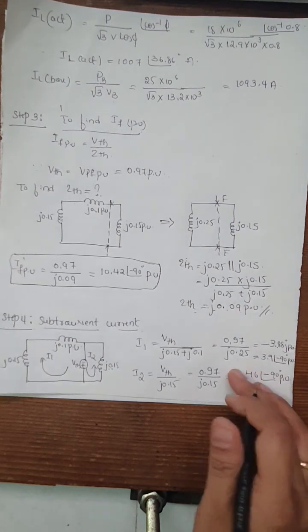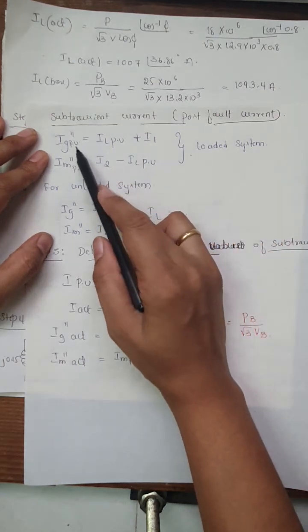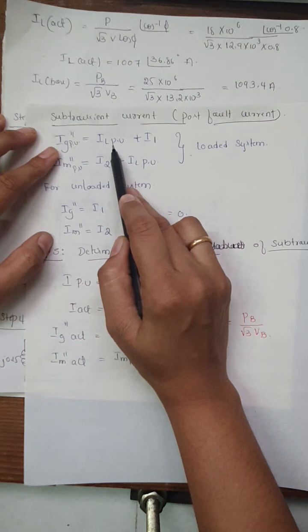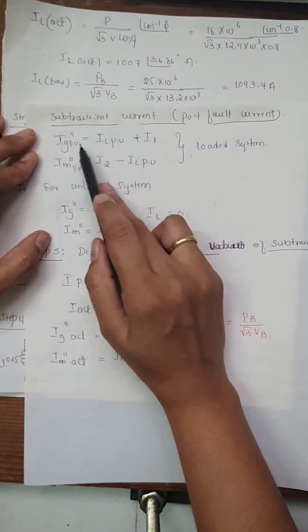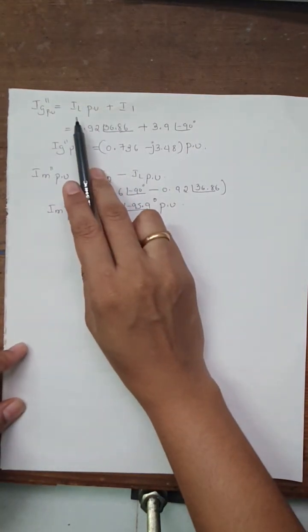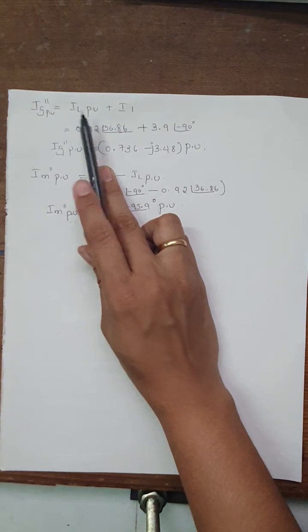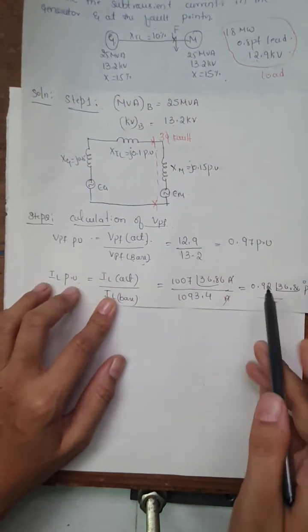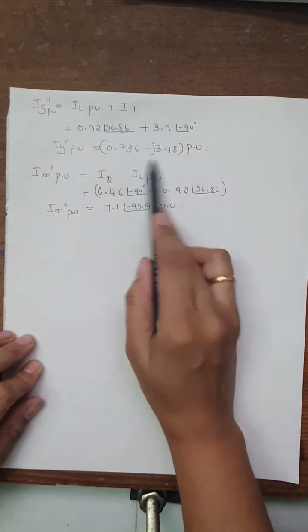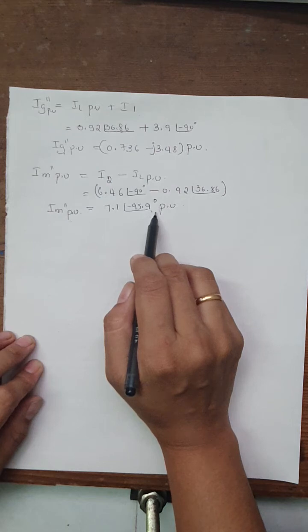Now we calculate the subtransient currents using the loaded formula. I_g'' per-unit = I_L + i1, where I_L = 0.92∠36.86° and i1 = −j3.88. Similarly I_m'' is calculated. The I_L value of 0.92∠36.86° from Step 2 is substituted, keeping results in both polar and rectangular form as appropriate. This completes Step 4.